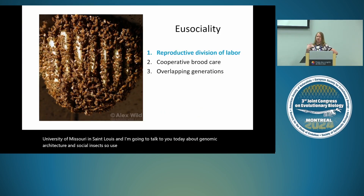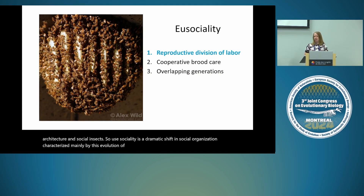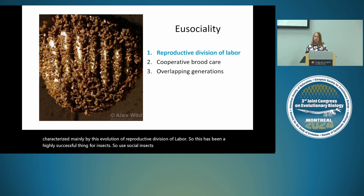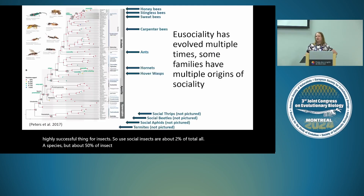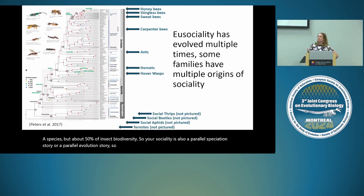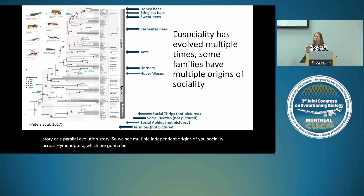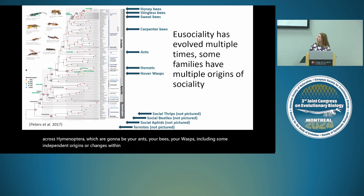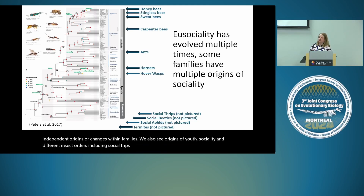Eusociality is a dramatic shift in social organization, characterized mainly by the evolution of reproductive division of labor. It has been a highly successful strategy for insects — eusocial insects are about 2% of all species but about 50% of insect biomass. Eusociality is also a parallel evolution story: we see multiple independent origins across Hymenoptera — ants, bees, wasps — as well as in social thrips, social beetles, social aphids, and termites.